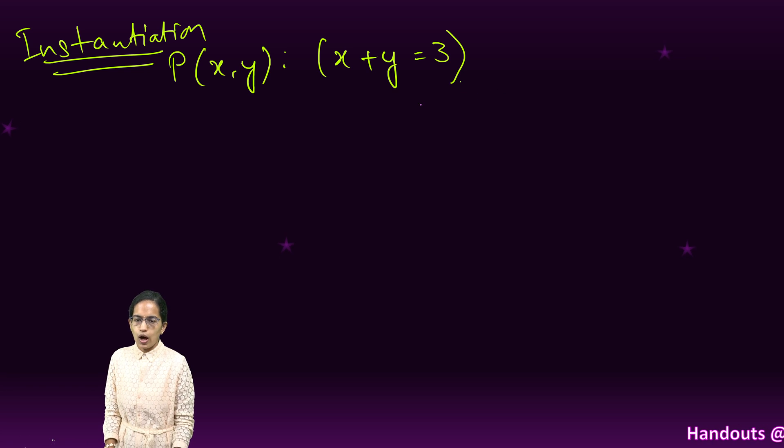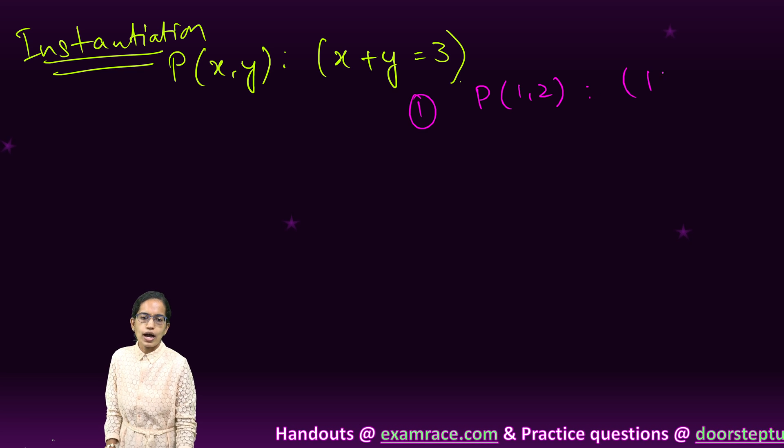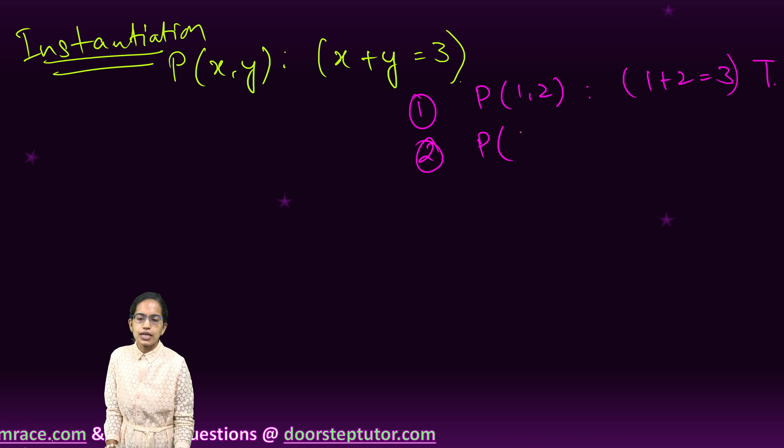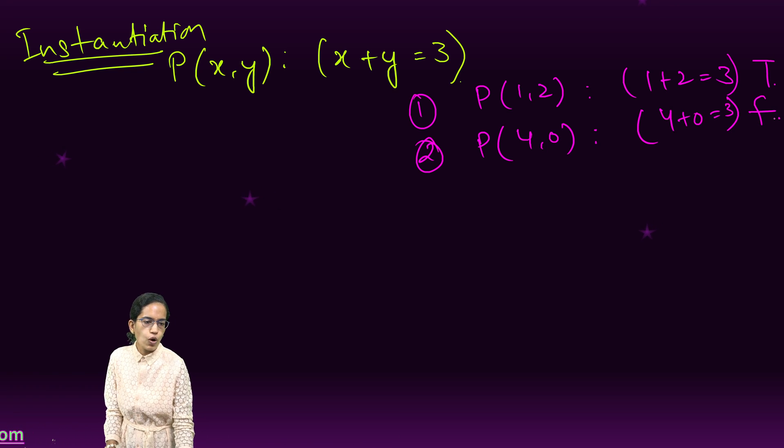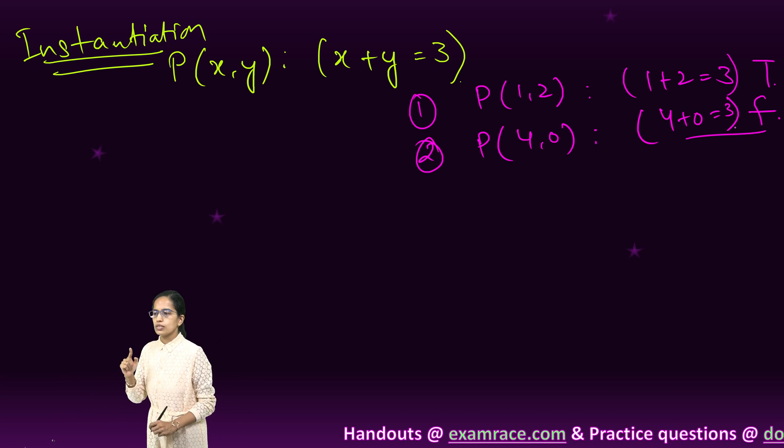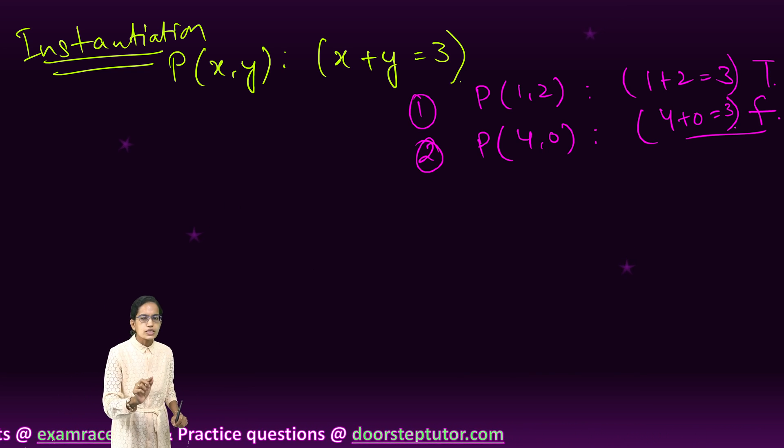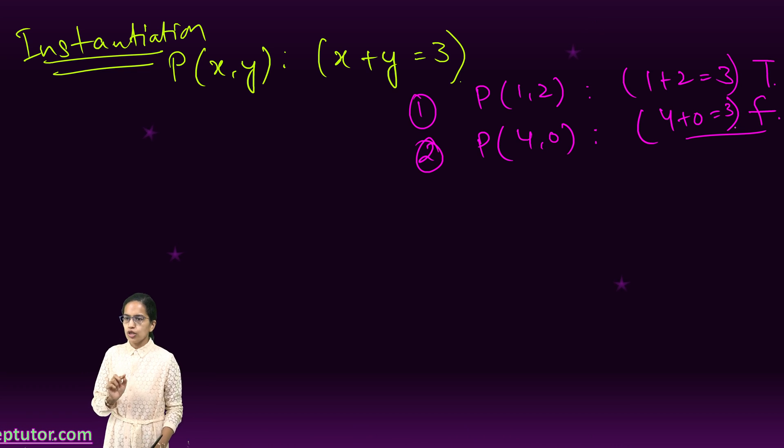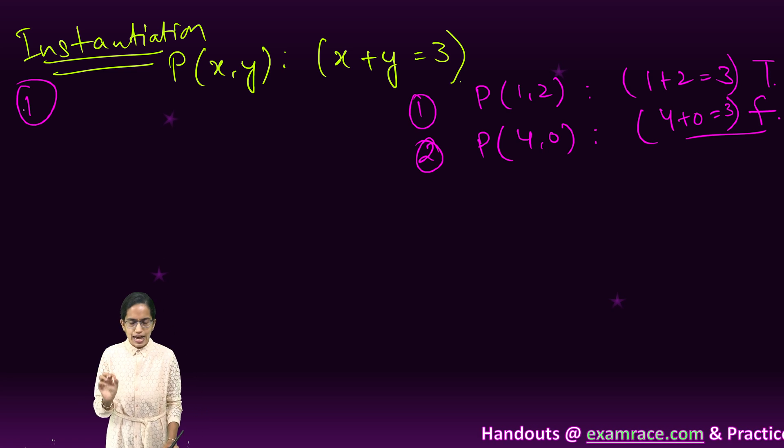Example 1: I take P(1,2), which makes 1 plus 2 equals 3. That makes it true. In the second example, I take P(4,0), which makes 4 plus 0 equals 3 as false because this is incorrect. This is what we also called the propositional function. Here we use the concept of instantiation because I am using individual constants rather than variables to prove whether it is true or false. This is the first derivative of predicate calculus, which is instantiation.